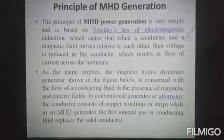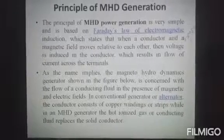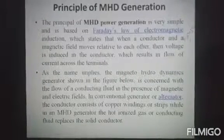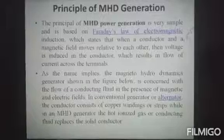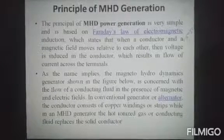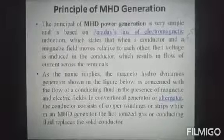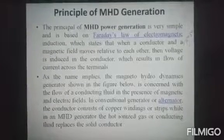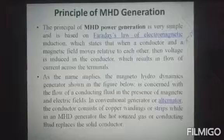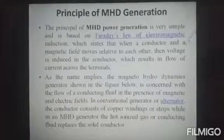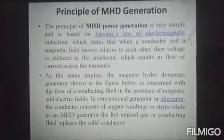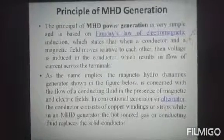As the name implies, the MHD generator is concerned with a conducting fluid in the presence of magnetic and electrical fields. In a conventional generator or alternator, the conductor consists of copper windings. In the MHD generator, hot ionized gas acting as a conducting fluid replaces the solid conductor.